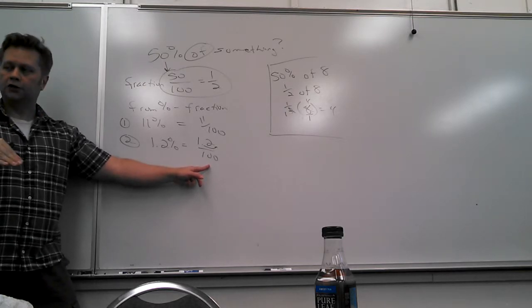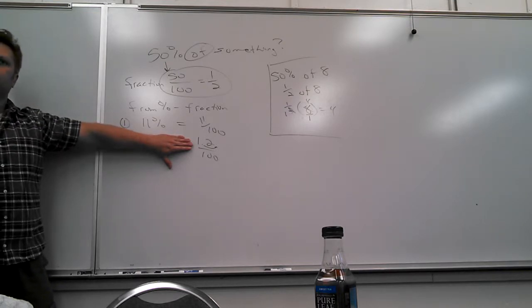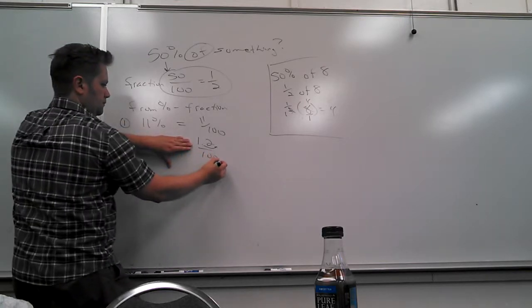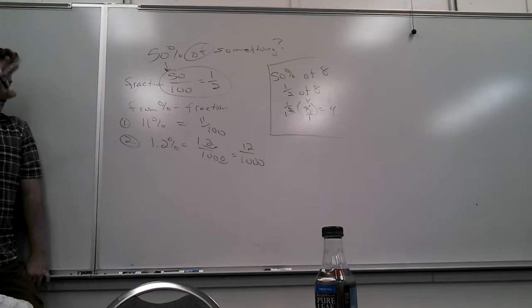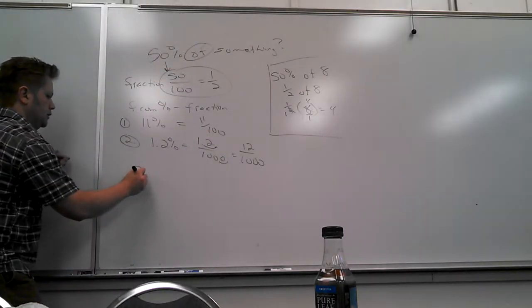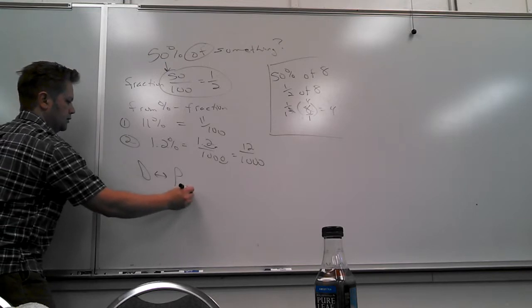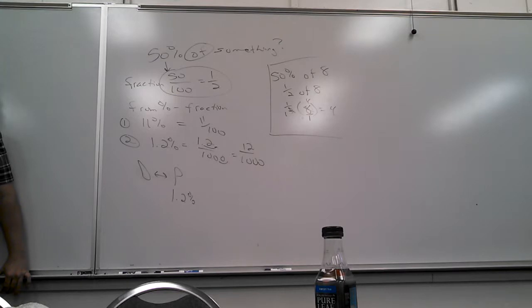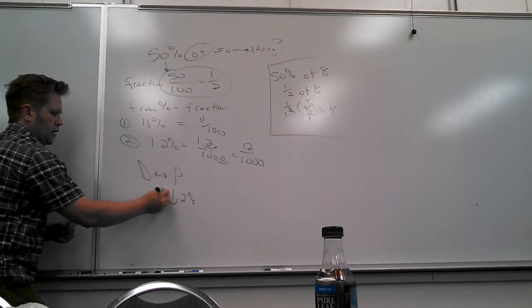Now, if you change the percent to a decimal, what has to happen? If I want to go from percent to decimal — how many times do I have to move the decimal place? Twice. Why twice? Because percent means out of a hundred — there are two zeros in a hundred, so you move it twice. Divide by ten, you move it back once. Divide by a hundred, you move it back twice. So 1.2% as a decimal: move once, twice — it'll be 0.012.